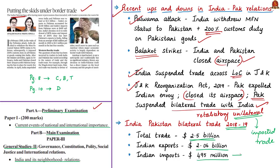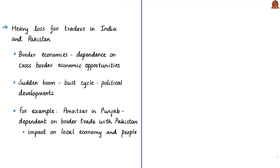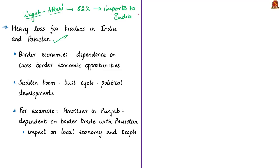After these unilateral actions, Pakistani exports to India drastically reduced from an average of 45 million dollars per month in 2018 to 2.5 million dollars per month in the last four months. Traders in both countries incurred heavy losses. The loss varies by trade route — through the Wagah-Attari land route, almost 82% of total trade was imports to India, and border economies depended heavily on this cross-border economic activity.